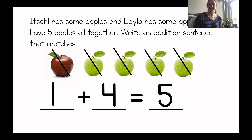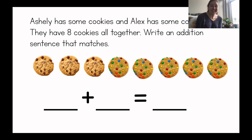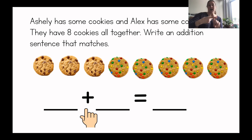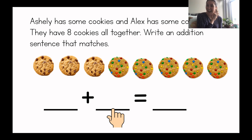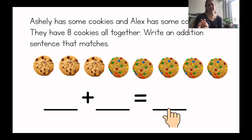Let's do one more together. It's about cookies. Listen. Ashley has some cookies and Alex has some cookies. They have eight cookies all together. Write an addition sentence that matches. So first, we'll need to count the cookies that Ashley has because we know that she has some cookies. And then plus the number of cookies that Alex has. And then we need to figure out what that equals. It will equal eight, but we'll also count to double check.